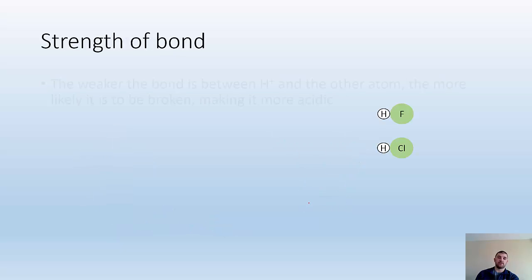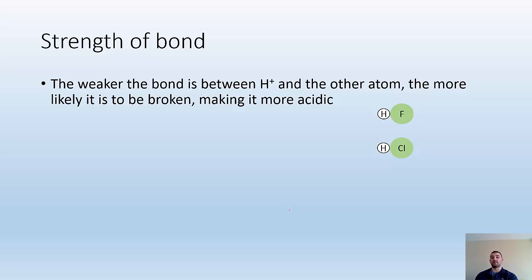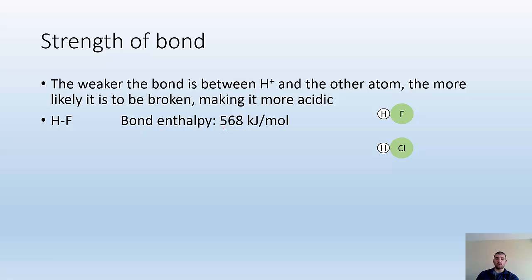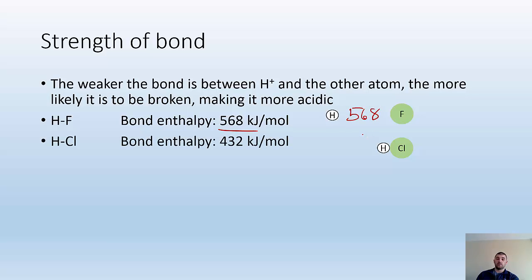The strength of the bond is also something to consider. The weaker the bond is between H+ and the other atom, the more likely it is to be broken, making it more acidic. The bond enthalpy for HF is 568 kilojoules per mole — it's going to take 568 kilojoules to break that bond. Whereas HCl, it's only 432 kilojoules per mole, so you don't have to invest as much energy to break that bond. That is why HF is a weak acid and HCl is a strong acid.